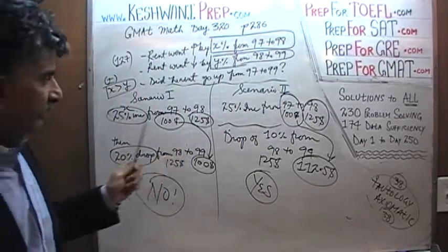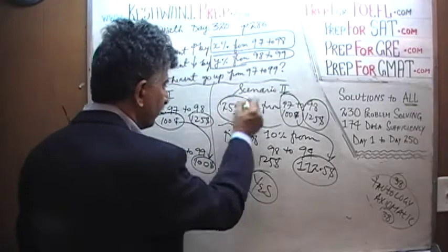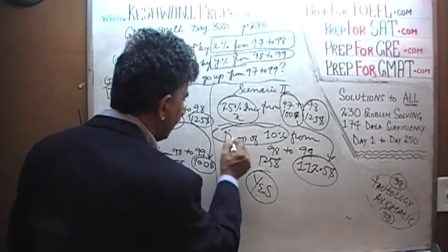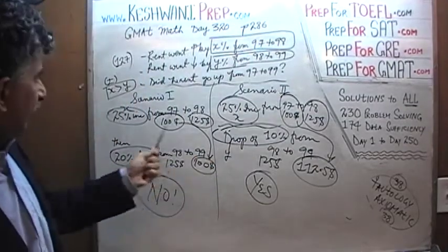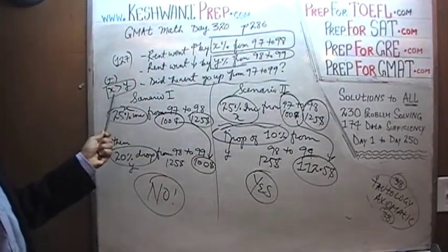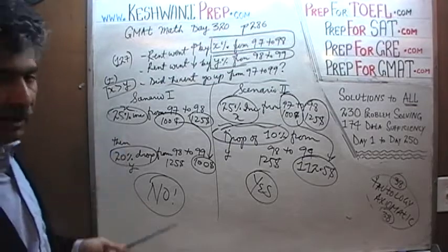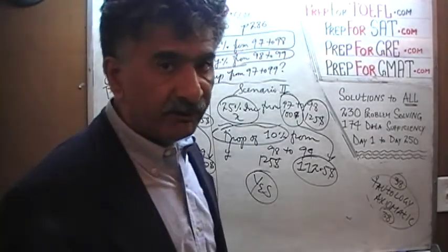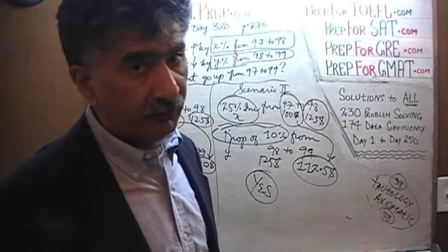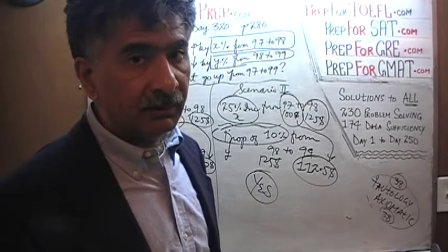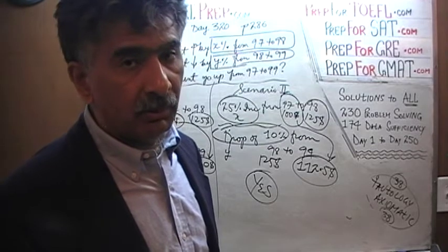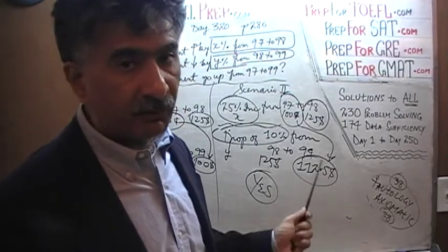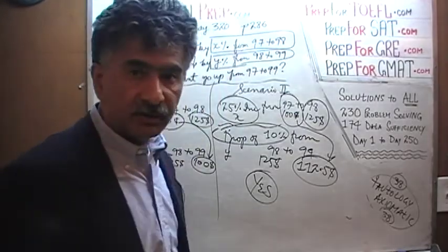X was 25 percent in both cases. In the first scenario Y was 20 percent, in the second Y was 10 percent. X is more than Y in both — that is the condition we have to meet. But the information that X is more than Y apparently is not enough. There is not sufficient data to know for a fact whether rent went up or did not go up from 1997 to 1999. The first statement is not enough.